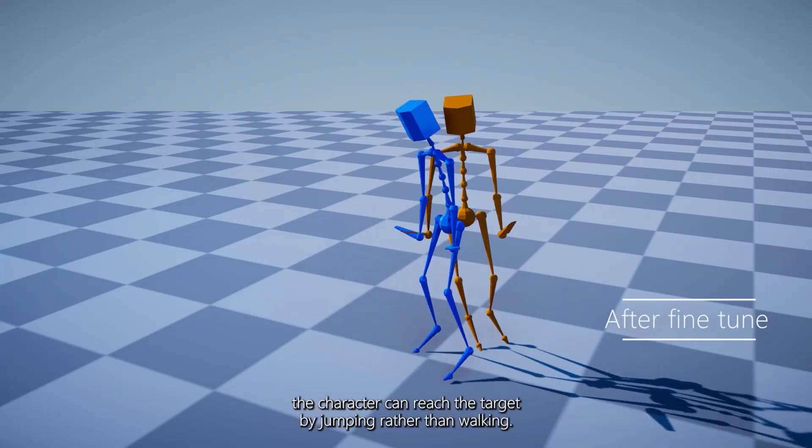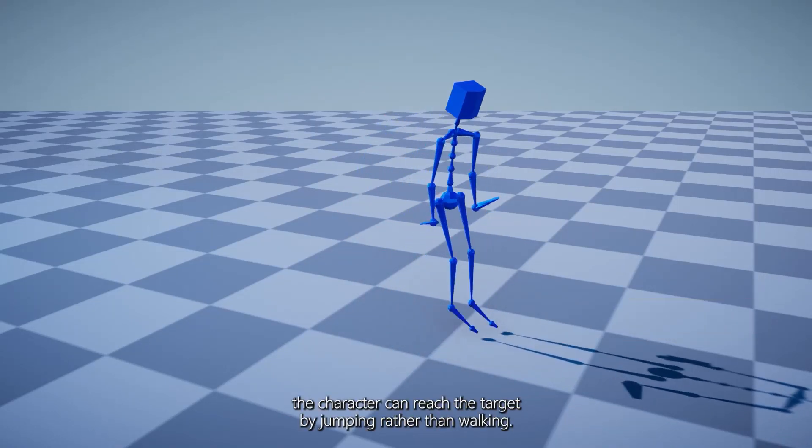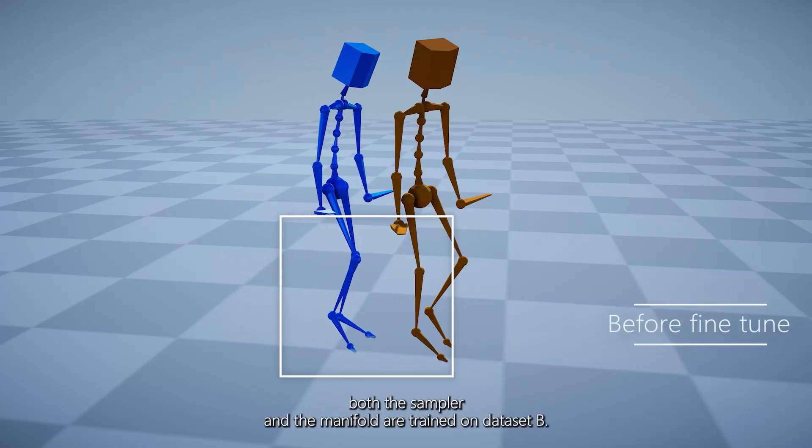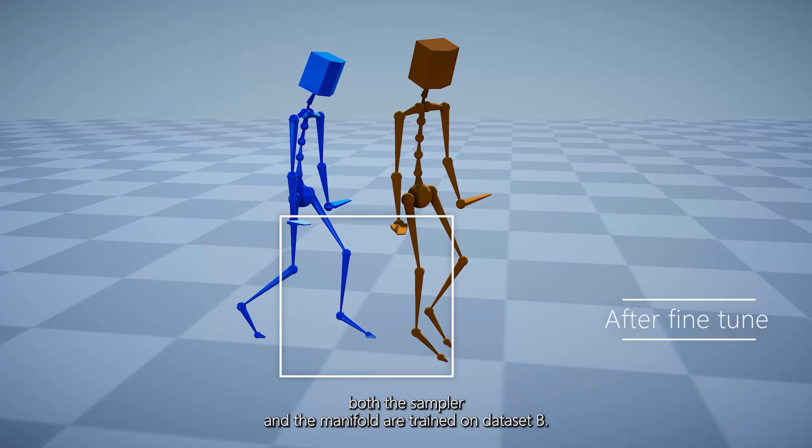After fine-tuning, the character can reach the target by jumping rather than walking. Besides, we fine-tune the model in which both the sampler and the manifold are trained on dataset B.